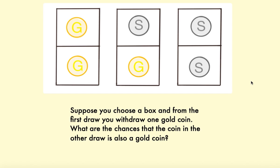And the question is, suppose you pick one of those boxes and you open one of the drawers and you withdraw a gold coin. So in your first pick from the drawer you get a gold coin. What are the chances that the coin in the other drawer is also a gold coin?